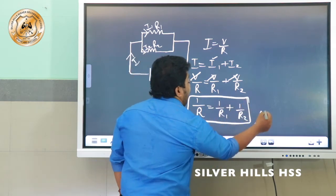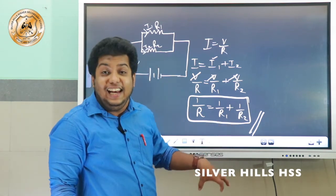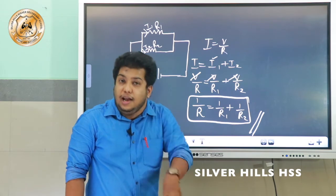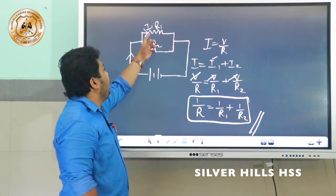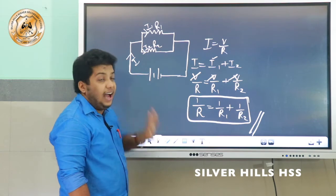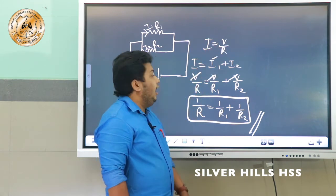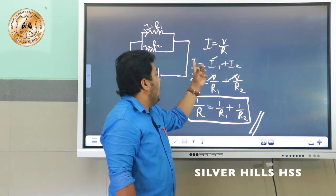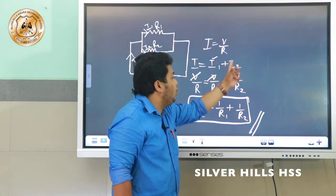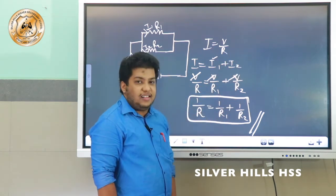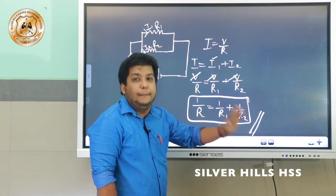This is the equation to find effective resistance in parallel combination. In parallel combination, potential difference will be same but current will be different. The current through R1 is I1 and through R2 is I2. According to Ohm's law, I is equal to V by R, and I equals I1 plus I2. Substituting: V/R equals V/R1 plus V/R2. The V terms cancel, giving 1 by R is equal to 1 by R1 plus 1 by R2.